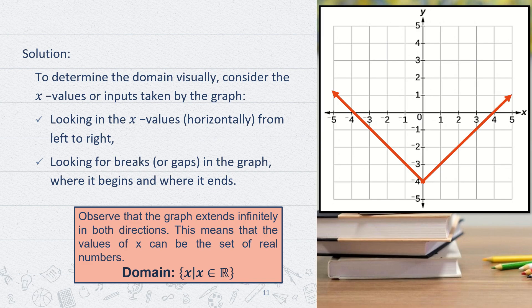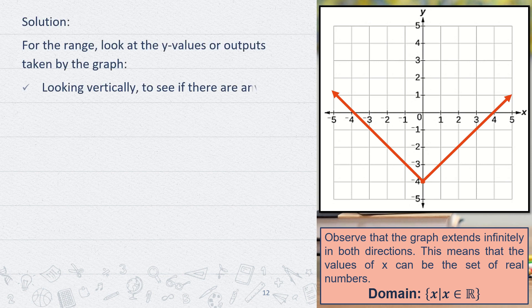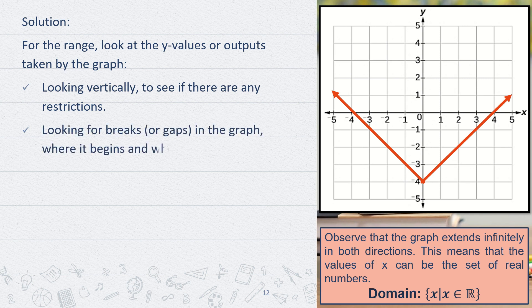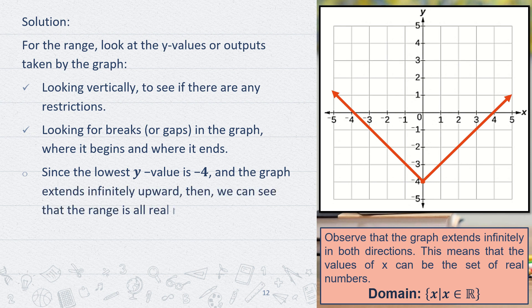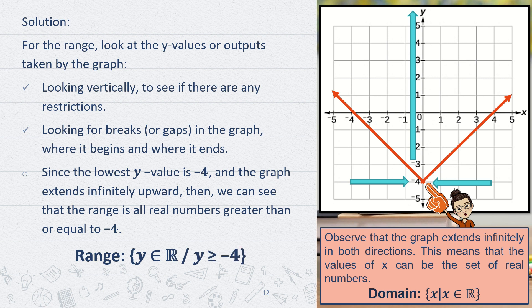Next, let us determine the range of the same graph. Look at the y values or outputs taken by the graph by looking vertically to see if there are any restrictions, and look for breaks or gaps where the graph begins and ends. Since the lowest y value is -4 and the graph extends infinitely upward, the range is all real numbers greater than or equal to -4. In symbols: {y ∈ ℝ | y ≥ -4}.